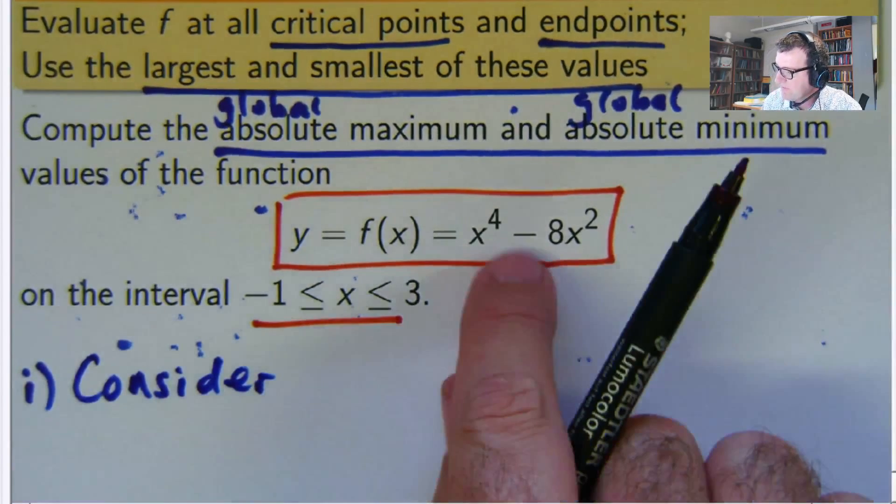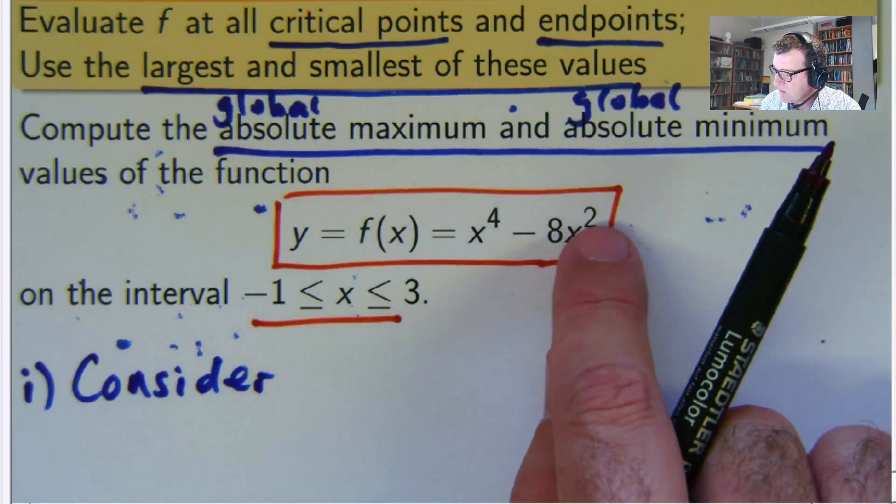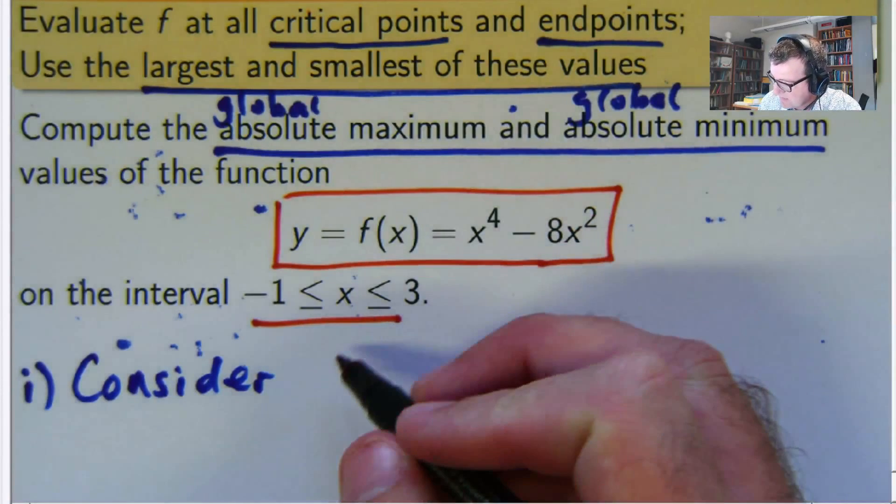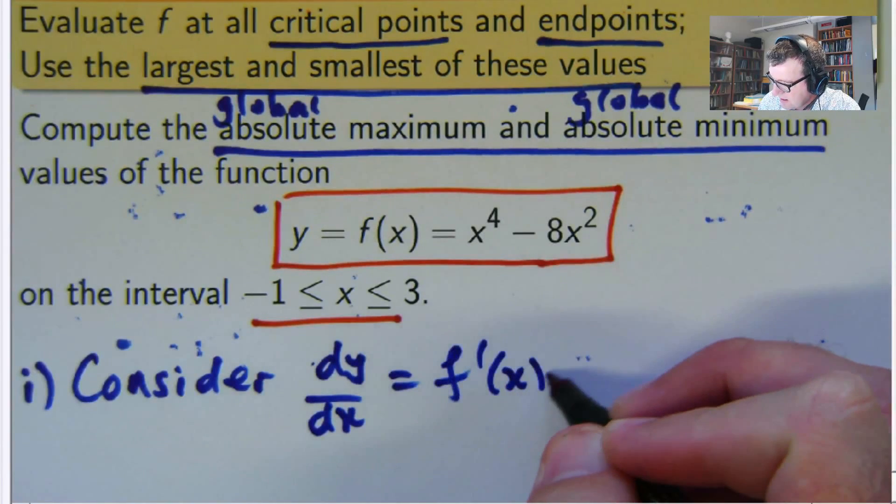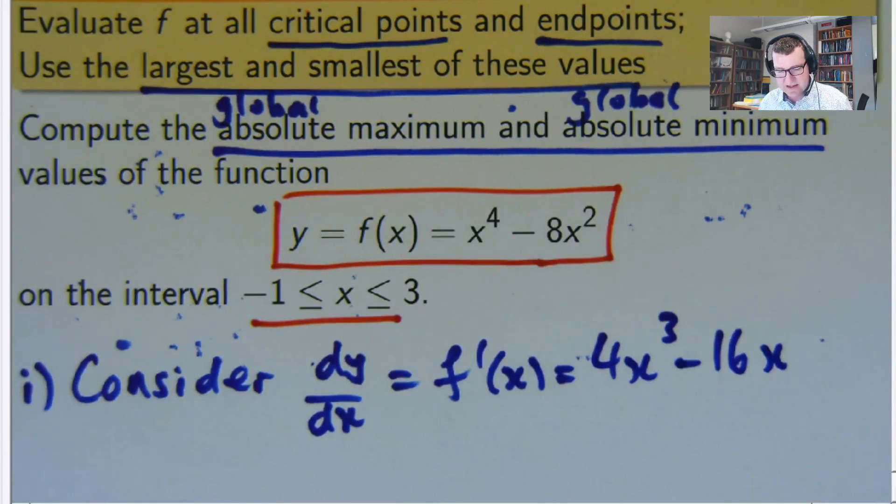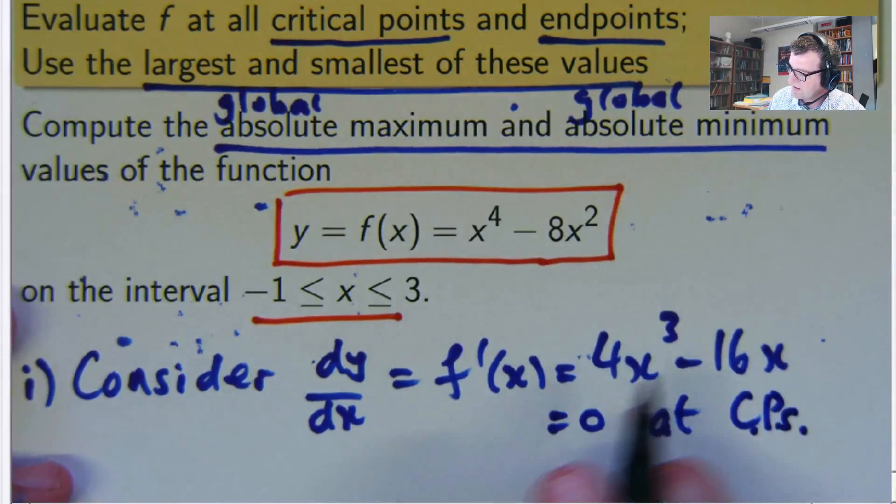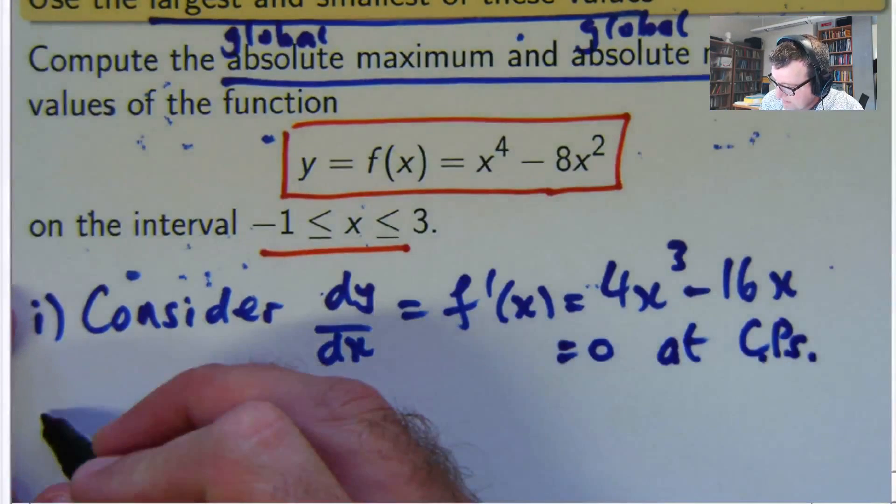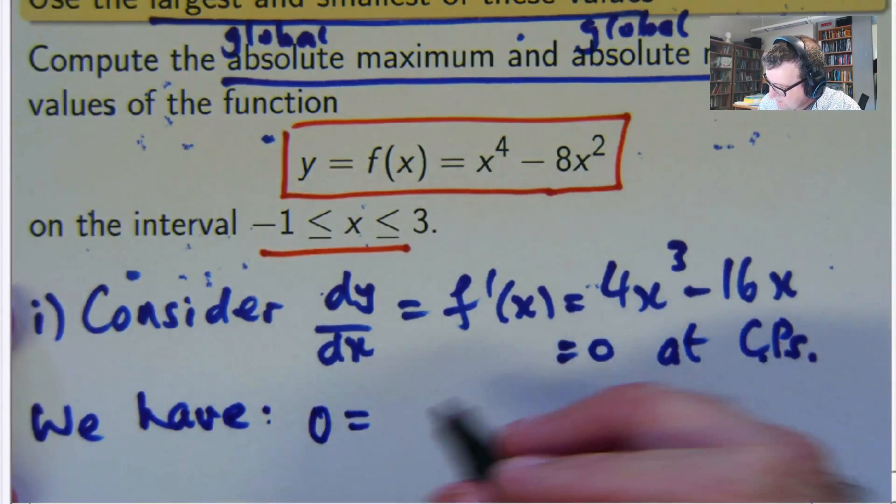Let's differentiate this. The x to the power of 4 will become 4x³. The 8x², well the 2 comes to the front, 16, will become 16x. So I'll get 4x³ - 16x. And we want to set this equal to zero and solve for x.